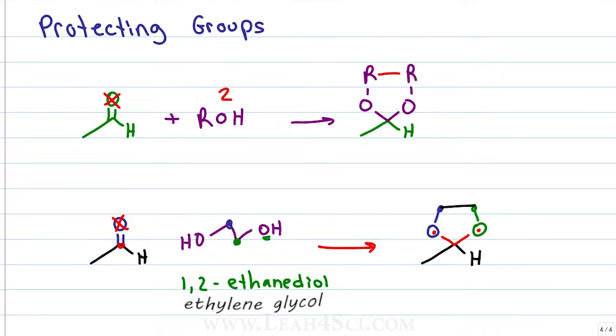Any time you want to protect a carbonyl, give it a gas mask, proceed with your reaction and then all you have to do is react this with acid to remove the protecting group because remember all of these reactions are reversible.